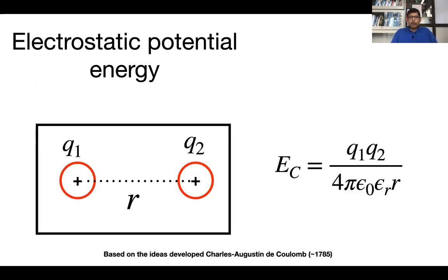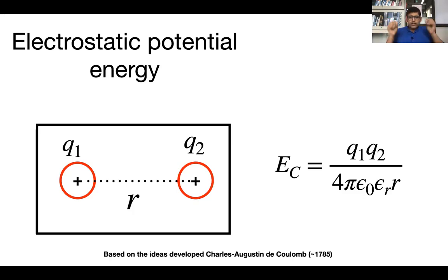Something you all know is that if you take two charges — either two positive charges or two negative charges — they repel. The electrostatic potential energy can be computed based on ideas developed by Charles Augustin de Coulomb in the late 18th century. The Coulomb energy EC equals Q1·Q2 divided by 4πε₀εᵣR, where Q1 and Q2 are the charges, ε₀ and εᵣ are permittivities, and R is the distance between the two charges.